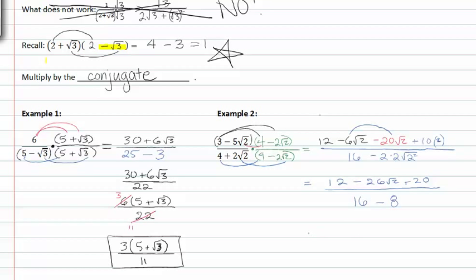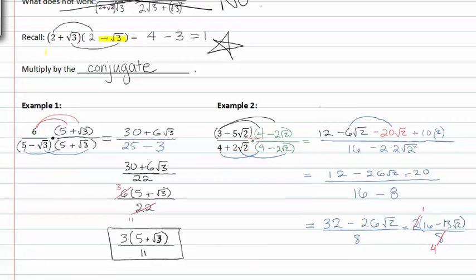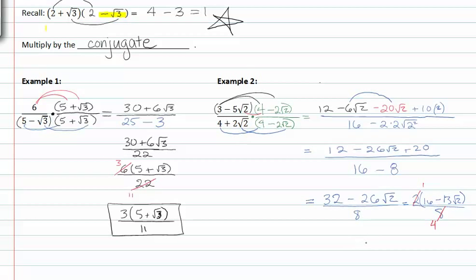From here we can simplify the numerator by adding twelve and twenty together to get thirty-two minus twenty-six root two, all over sixteen minus eight, which is eight. Our common factor in the numerator is two, leaving sixteen minus thirteen root two, all over eight. Reducing out the common factor of two gives us four in the denominator. Finally, we can rewrite the whole reduced fraction as sixteen minus thirteen root two, all over four.